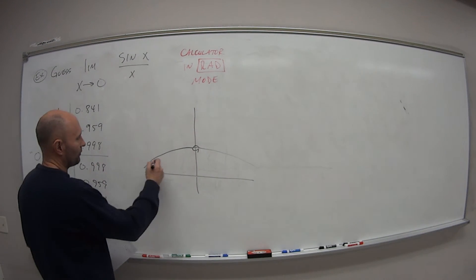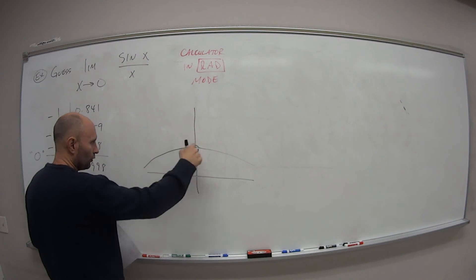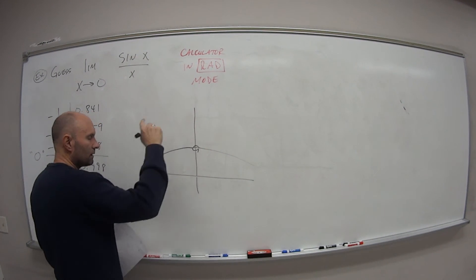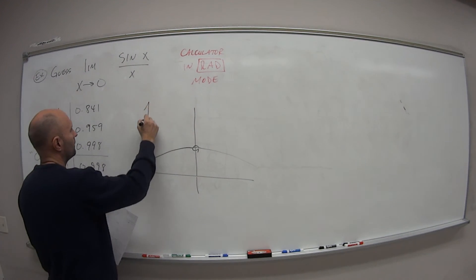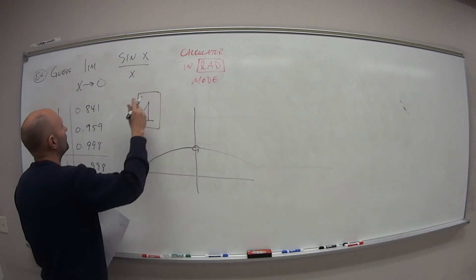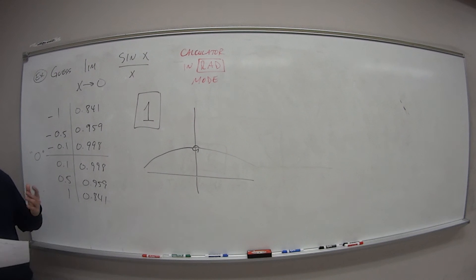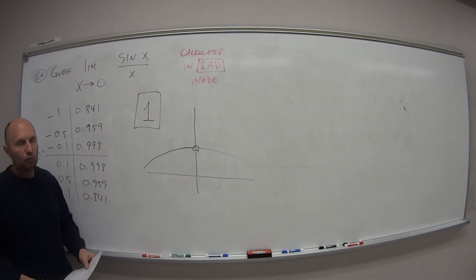So that again, if we're coming from the left, we're getting closer and closer to 1. As we come from the right, closer and closer to 1. Therefore, the answer to this one, the limit as x approaches 0 of that function, is equal to the value 1.